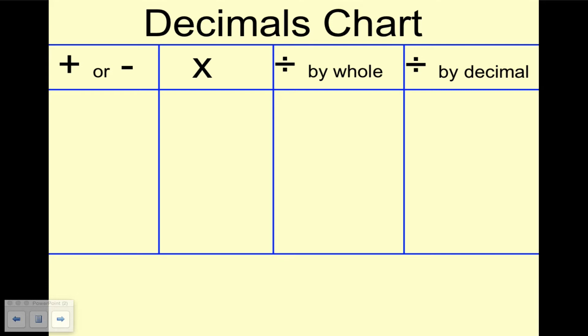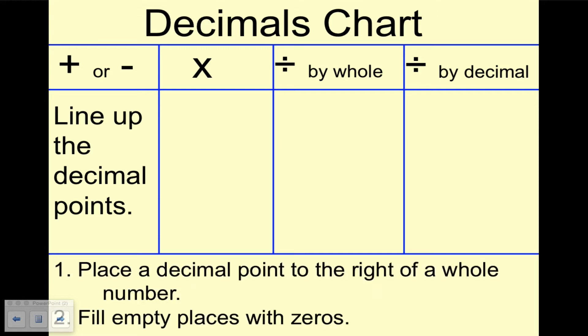In our decimals chart, the first column represents how to add or subtract decimals. What you do is line up the decimal points. Also at the bottom of our chart, let's put that you place a decimal point to the right of a whole number.